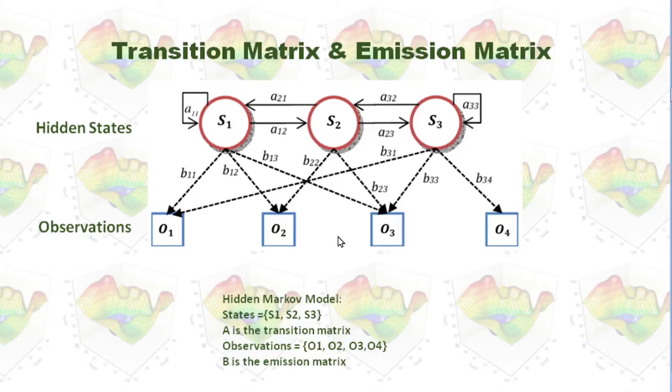Of course, there are certain connections between hidden states and observations. This is drawn with this dotted line.